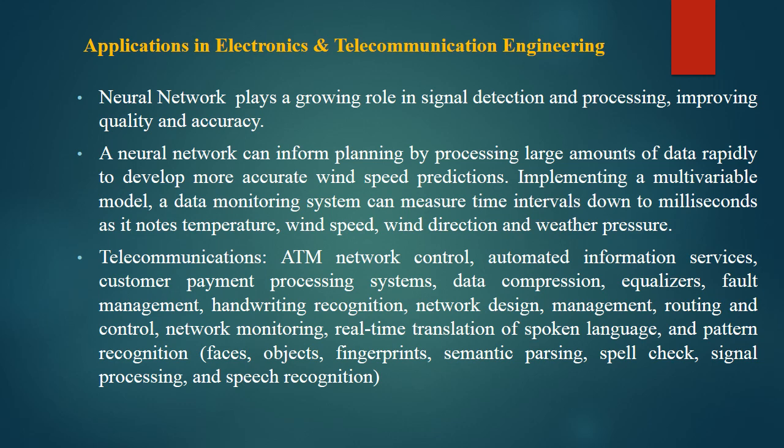Let us see some of the applications of neural networks in ENTC engineering. Neural networks are known for quality and accurate solutions, so they play a major role in signal detection and processing. Neural networks are also known for accurate predictions. One example is accurate wind speed prediction. Since solar and wind power sources are not always available, power system scheduling is vital to maintain a consistent supply, and neural networks help predict accurate wind speed in such situations.